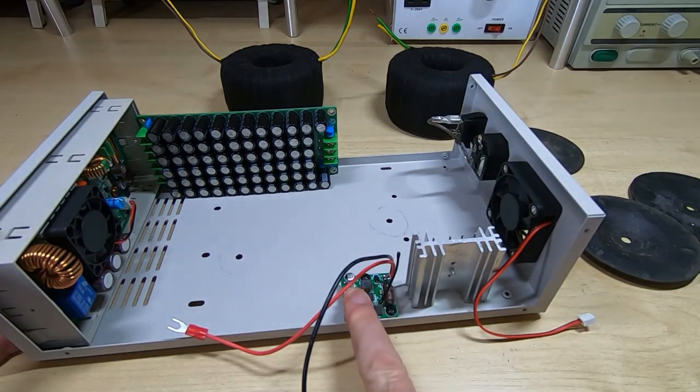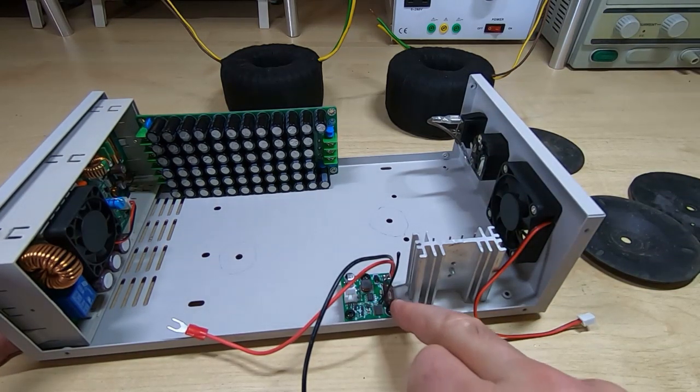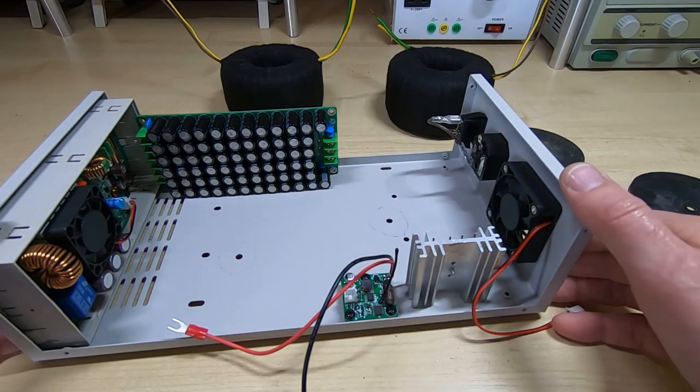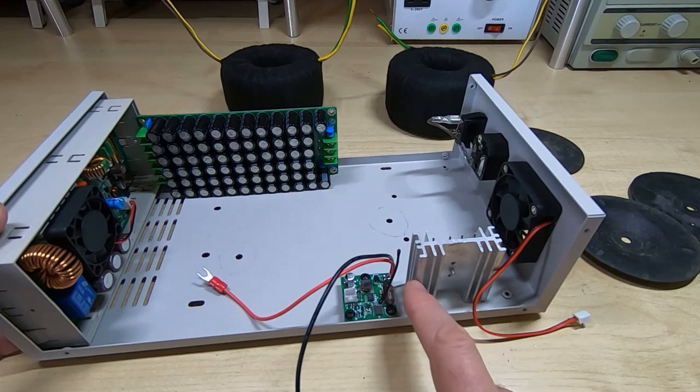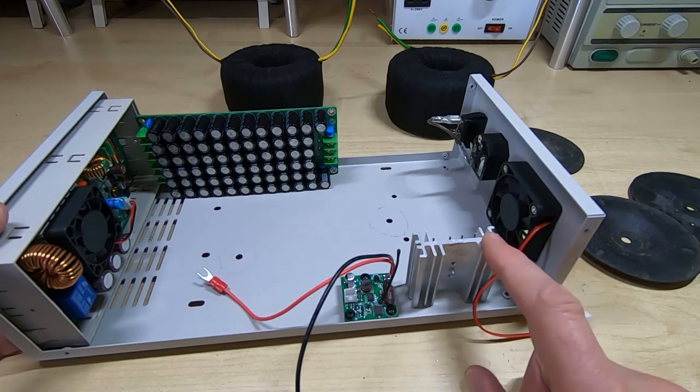This is where the fan controller board is going to fit. I'll retain it in that location. This sensor will be attached to the heatsink. This will be the hottest part of the system.